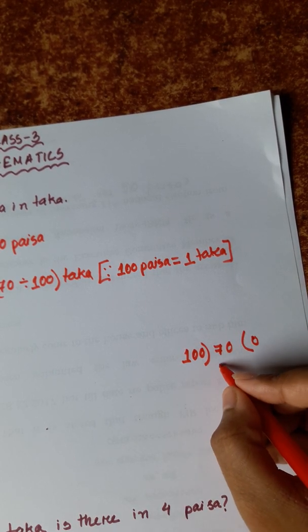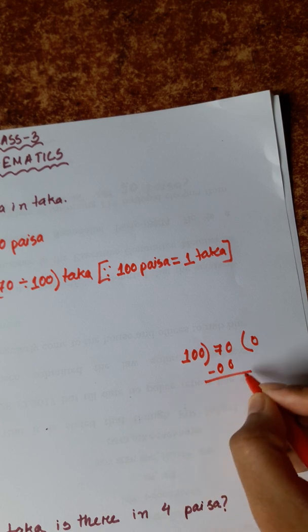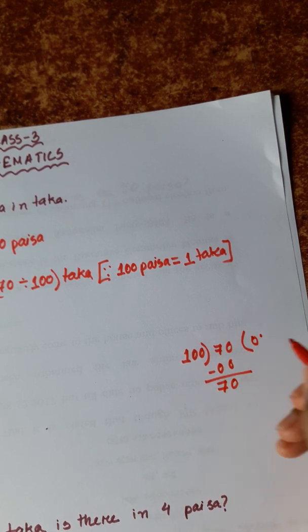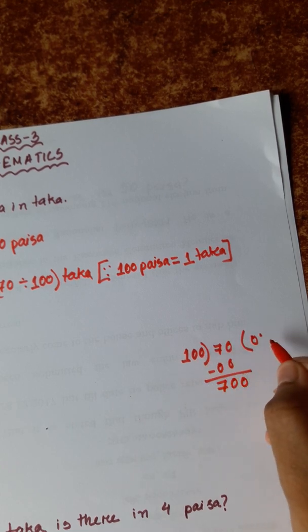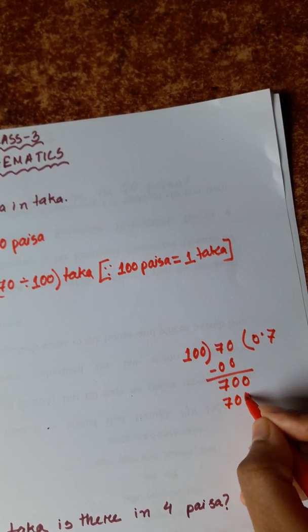First 100 0s are 0, 70, then decimal, then 100 into 7 is 700. So 700.